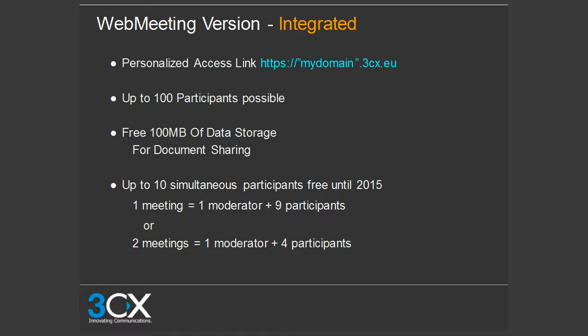With these three simple steps completed, you get a personalized access link, up to 100 participants, 100 megabytes of free data storage for document sharing, and up to 10 simultaneous participants for free. Ten simultaneous participants means one meeting with one moderator plus nine participants, or two meetings with one moderator and four participants each.